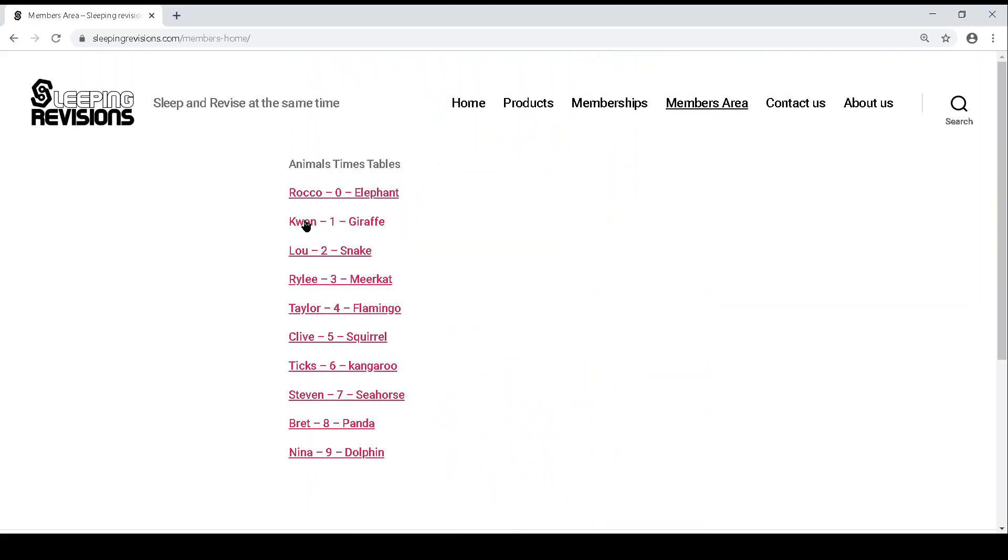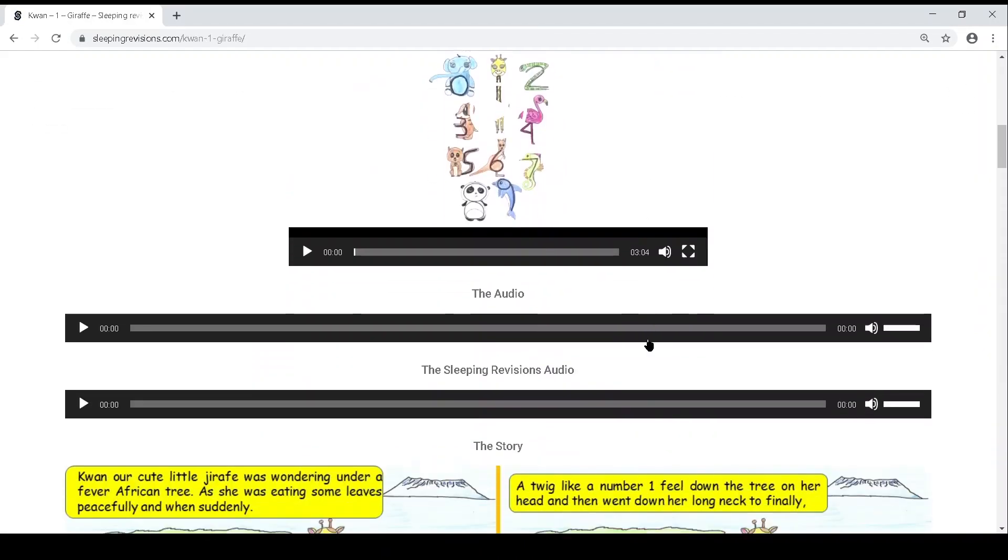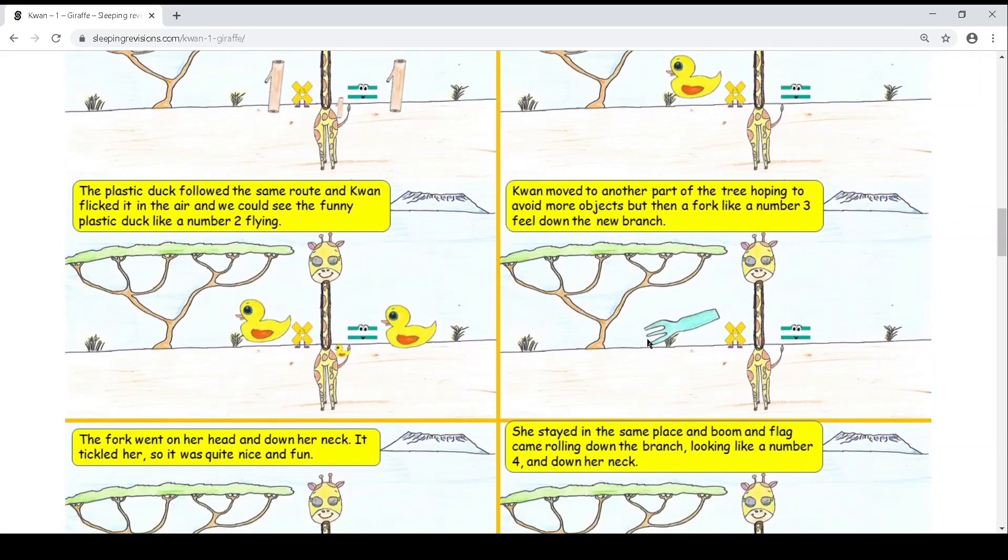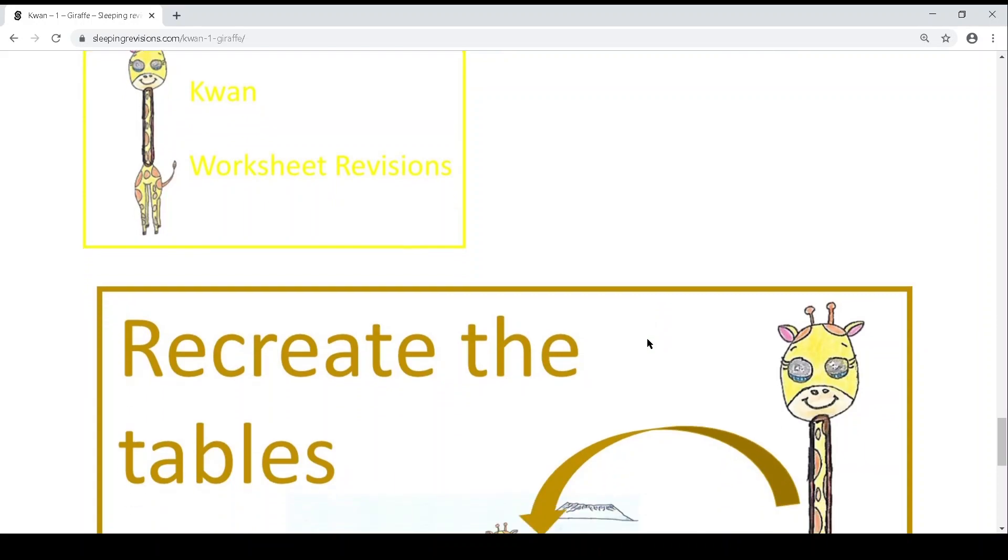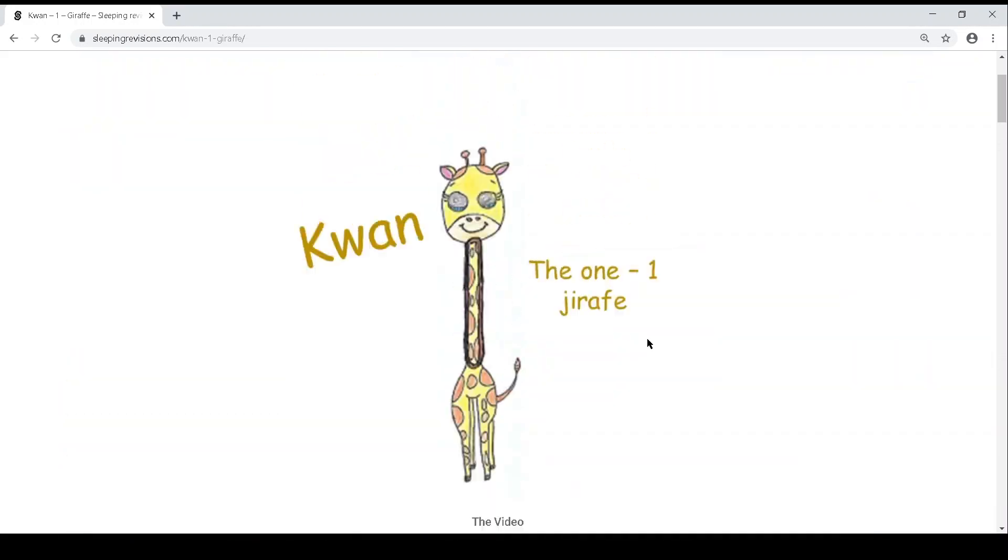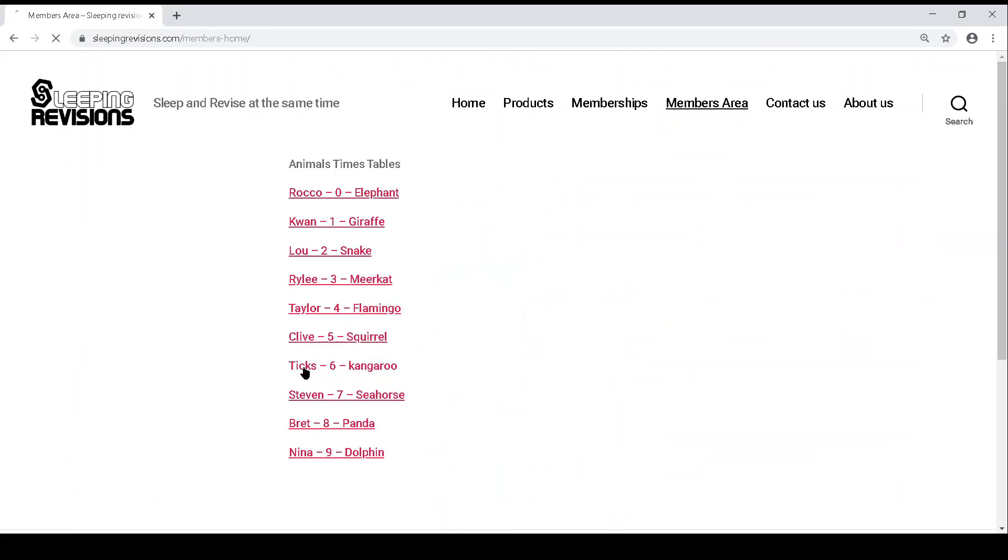You'll have the video, the audio, the sleeping revision audio, the stories, and the worksheet revision, and the recreate the table. This is for all of them. If I go to number six, for all the stories, same thing. Just need to load on this page.